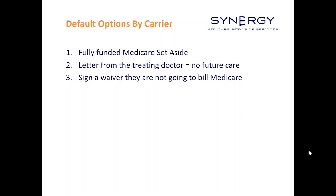Right now, Medicare is only reviewing liability Medicare set-asides on a case-by-case basis — meaning if you try to get Medicare's blessing on a liability case, the odds are they won't even look at it. The de facto last resort becomes having the trial court, probate court, or another court bless the allocation of the Medicare set-aside amount. Medicare has gone on record saying they will honor that ruling in lieu of CMS approval.